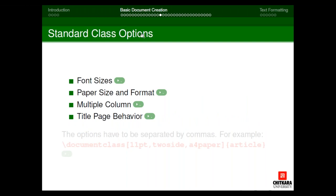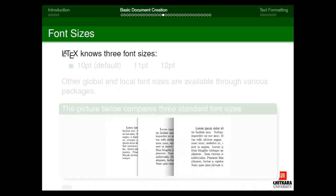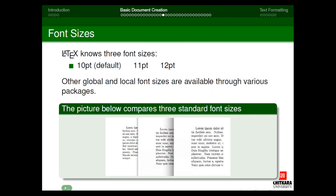Standard class options include font sizes, paper size and format, multiple columns, and title page behavior. LaTeX knows three font sizes: 10pt (default, no option needed), 11pt, and 12pt. Other font sizes are available through packages. For example, \documentclass[11pt]{article} sets the base font to 11pt, and \documentclass[12pt]{article} sets it to 12pt.